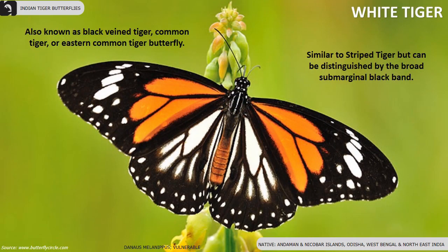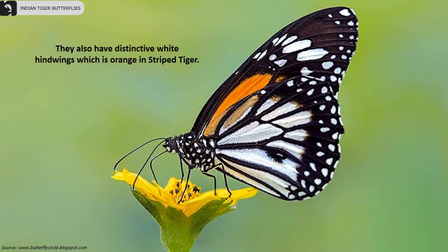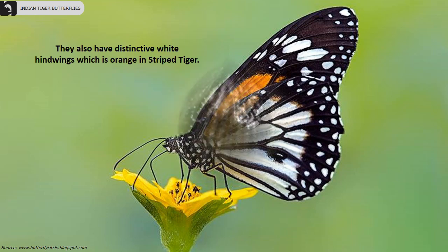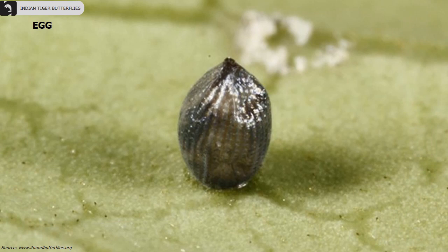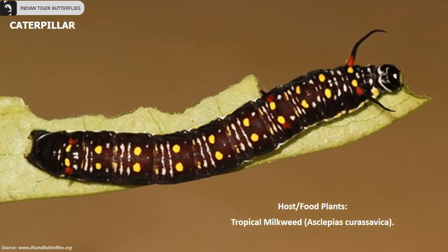White Tiger, also known as black-veined tiger or eastern common tiger, is a vulnerable butterfly species found in Andaman and Nicobar Islands, Odisha, West Bengal and Northeast India. They look similar to the Striped Tiger but can be distinguished by the broad sub-marginal black band. They also have distinctive white hind wings, which are orange in the Striped Tiger. Tropical milkweed is the host plant of White Tiger butterflies.